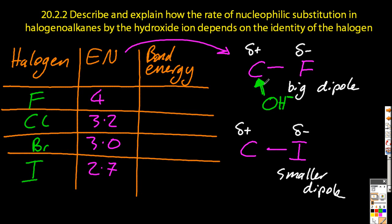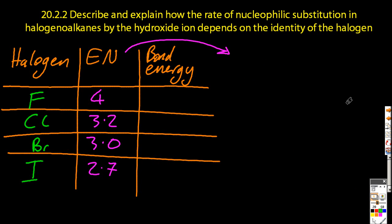So where will a hydroxide go? What's the most positive thing it can go to? Well, it's more likely to go towards the carbon attached to the fluorine as a greater dipole. So that's going to be a faster reaction, the fluorine.